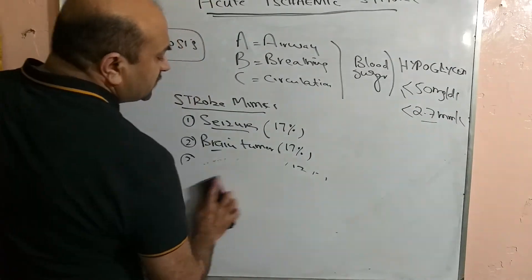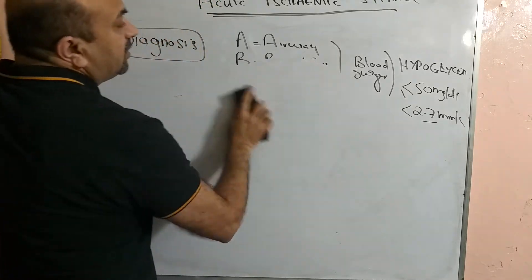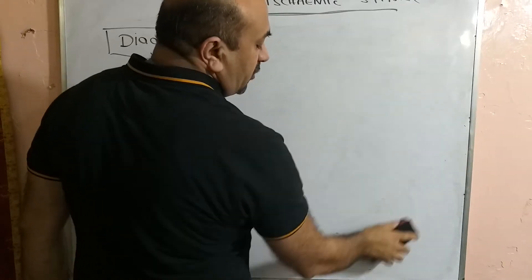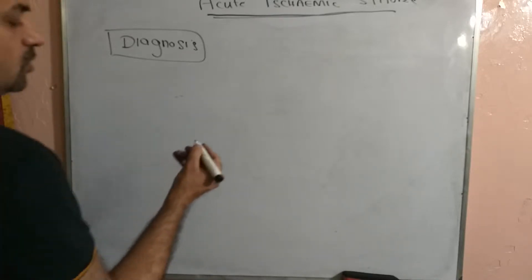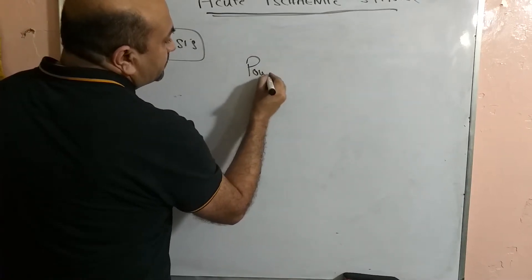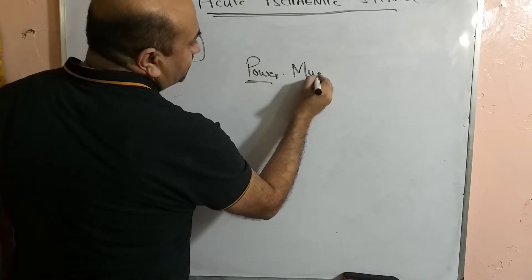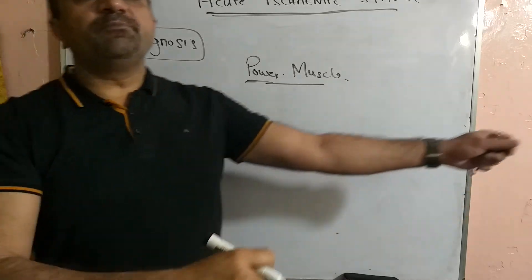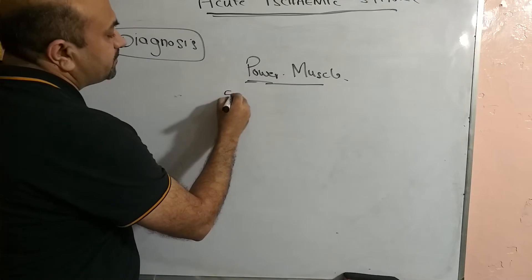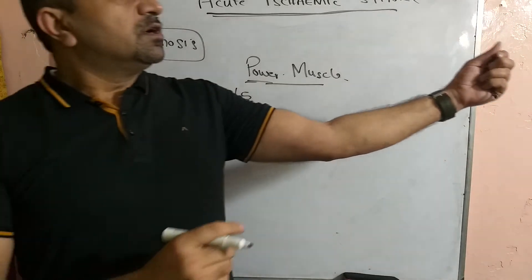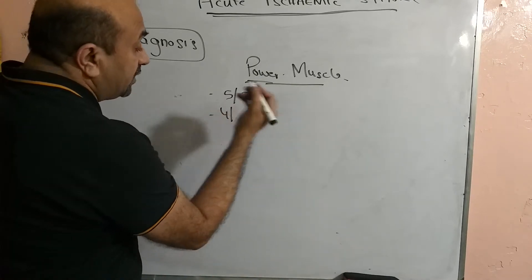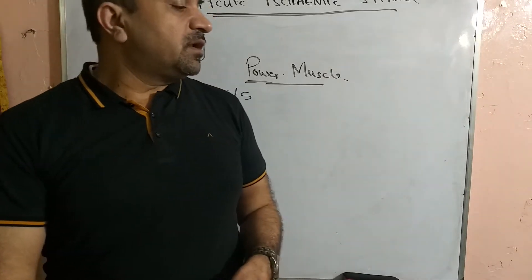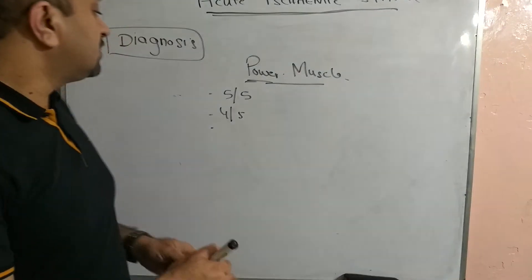Once we have taken a detailed history and performed physical examination, and we know that part of the body is not moving, we check muscle power. If the patient can move the limb properly against force, the power is 5 out of 5. If they can move against force but not as well as normal, we call it 4 out of 5. When the patient can lift the limb against gravity but cannot resist any force, that is 3 out of 5.